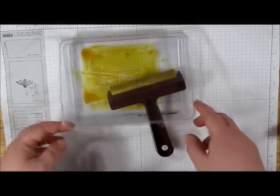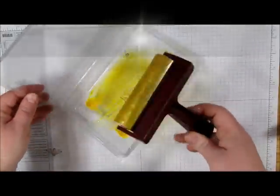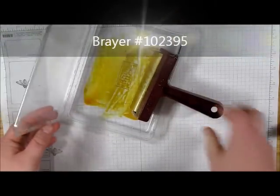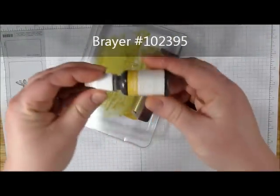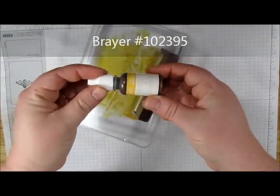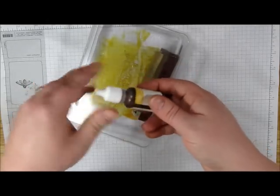The first thing you need is an empty clamshell stamp case. You'll need a brayer and some ink refill. I'm using Daffodil Delight ink refill.